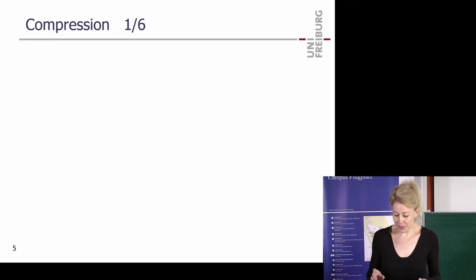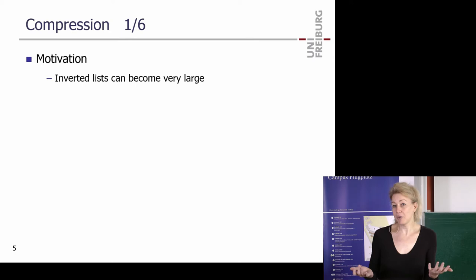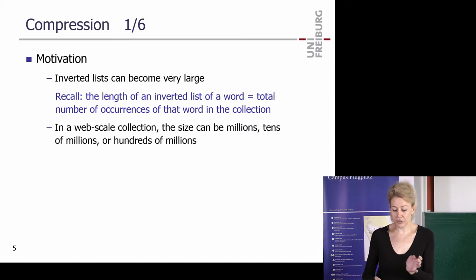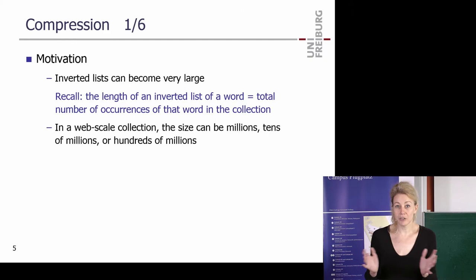Now let's talk about compression. What's the motivation? Inverted lists can become very large. We had collections with over one million entries — for example, every movie description contains the word 'film' somehow. In a web-scale collection, these lists are huge. Google also has an inverted index, and there the length can be tens of millions, hundreds of millions.